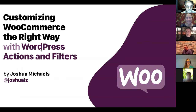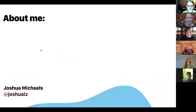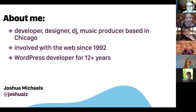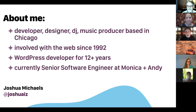A little bit about me. My name is Joshua Michaels. I'm a developer, designer, DJ, and music producer based in Chicago. I've been involved in the web in some way, shape, or form since 1992, and I've been a WordPress developer for over 12 years. I'm currently a senior software engineer at Monica and Andy, which is an organic baby and kids clothing company based in Chicago.